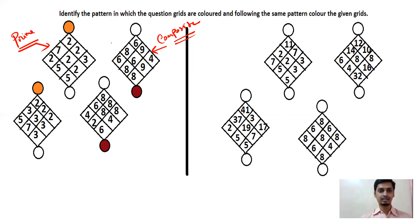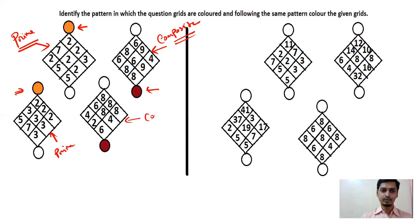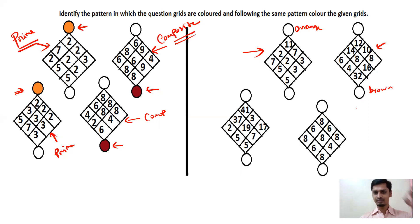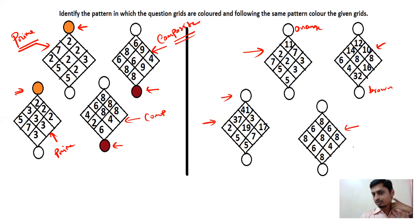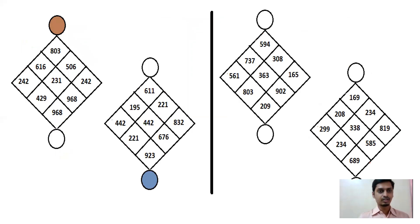Prime numbers are colored with orange at the top and composite numbers are colored with brown at the bottom. So for the first box which has only prime numbers, color with orange at top. For the second box with composite numbers, color with brown at bottom — just click the circle to get the color. For the third box with 41, 37, 2, 5, 19 — all prime numbers — choose orange at top. For the fourth box with composite numbers, choose brown at bottom.